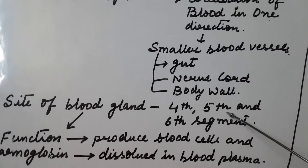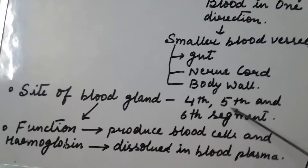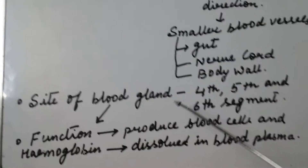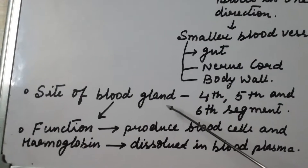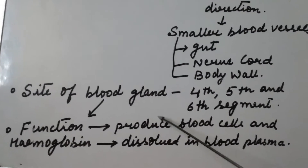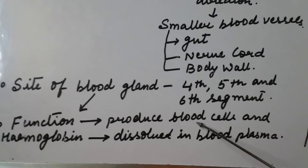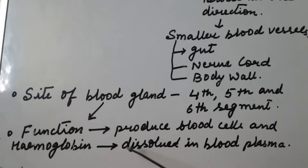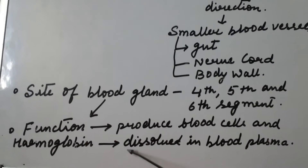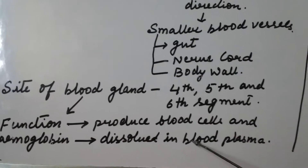There is also a presence of blood glands at the fourth, fifth, and sixth segments in the body of earthworm. The function of these blood glands is to produce blood cells and hemoglobin that are dissolved in blood plasma.